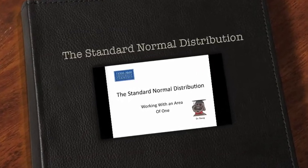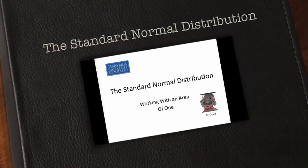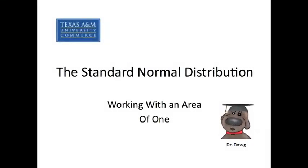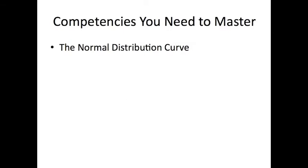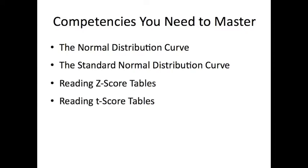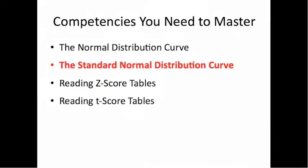We continue our discussion in Hidden Statistics of Learning to Work with a Normal Distribution by examining the standard normal distribution, or working with an area of 1. The competencies you need to master in this module include the normal distribution curve, the standard normal distribution curve, learning to read z-score tables, and learning to read t-score tables. In this specific discussion, we're going to examine the standard normal distribution curve.